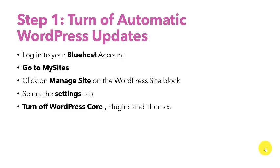Now let's look at Step 1, which involves turning off automatic WordPress updates. The first thing to do is log into your Bluehost account, then go to My Sites, click on Manage Site on the WordPress site block, select the Settings tab, and lastly turn off WordPress core, plugins, and themes.